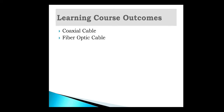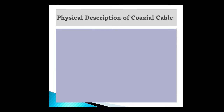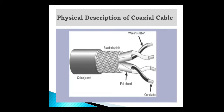Learning outcomes: Coaxial cable and fiber optic cables. Physical description of the coaxial cable. This is a coaxial cable having an outer conductor, then wire insulation, foil shield, braided shield, and cable jacket. The data is transmitted through the conductor and the other layers are used for coating.